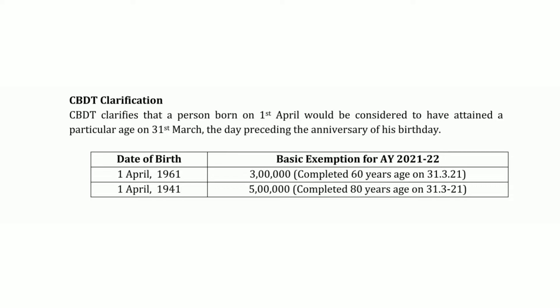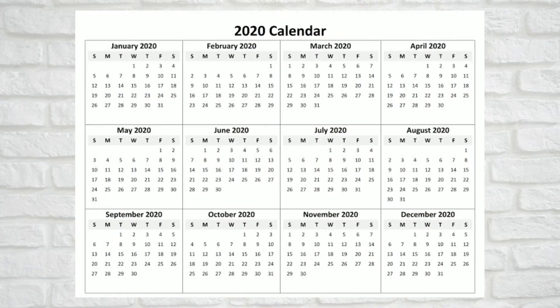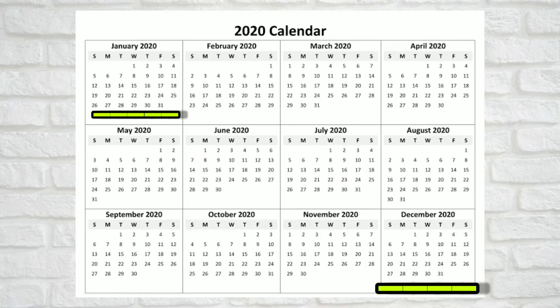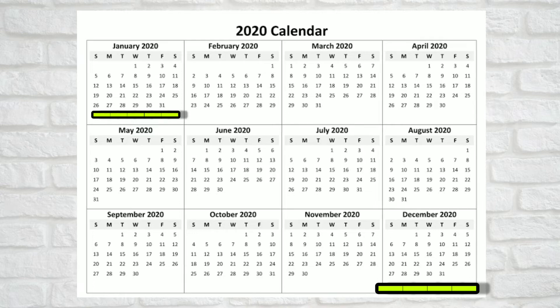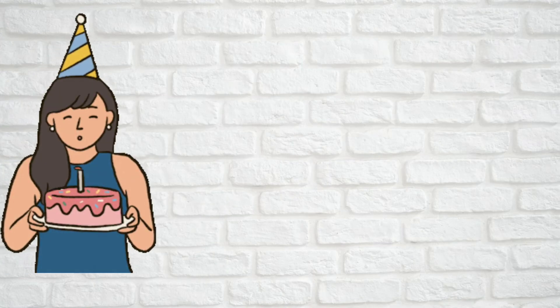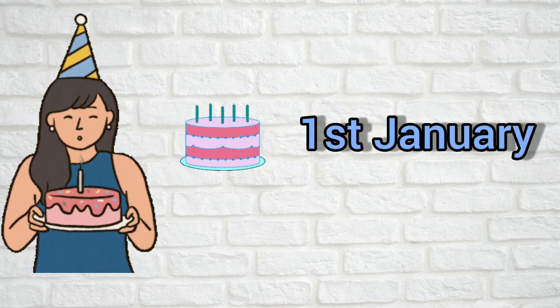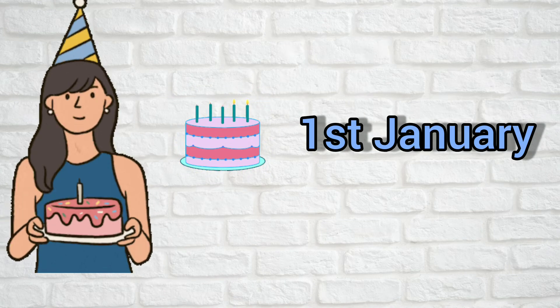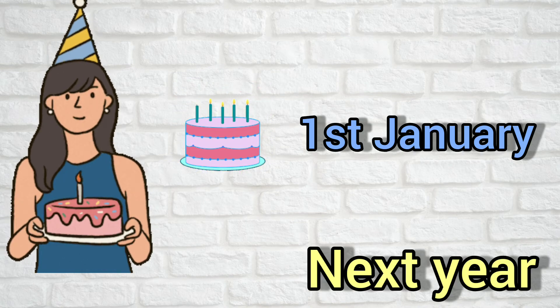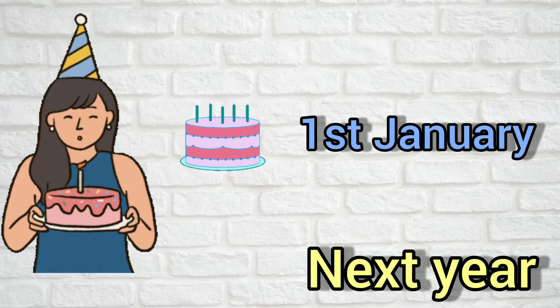So now try to understand this — kyunki year jab hota hai, first January se lekar 31st December tak hota hai. Yani ki agar hum 2020 ki baat karein toh year start hota hai first January 2020 mein aur khatam hota hai 31st December 2020. Lekin jab koi insaan apna birthday celebrate karta hai and if he is born on first January, toh woh apna birthday celebrate karta hai agle saal first January ko.